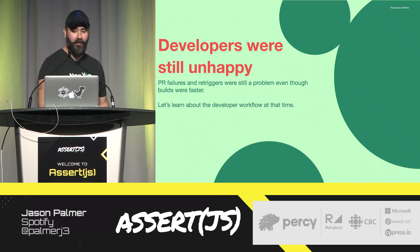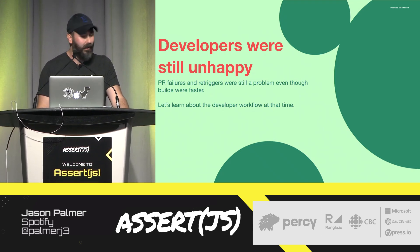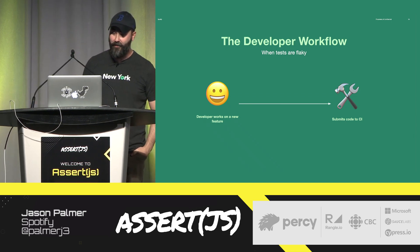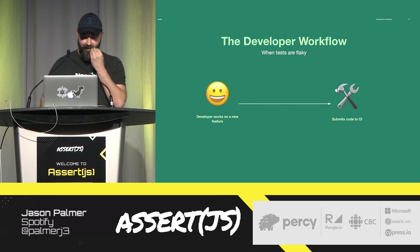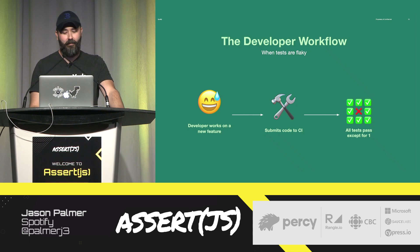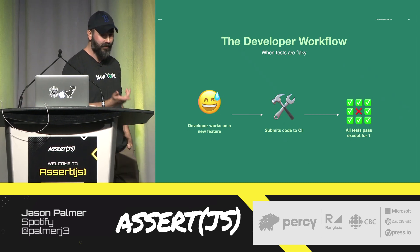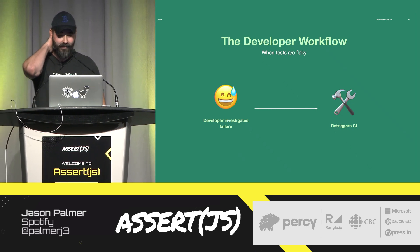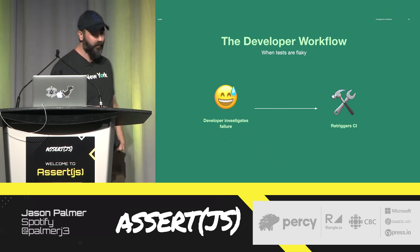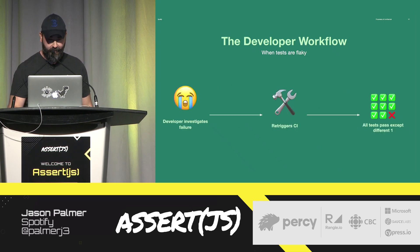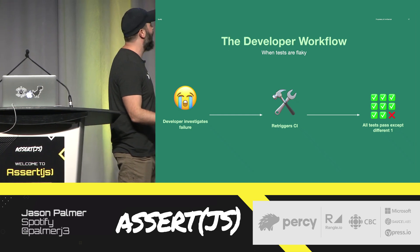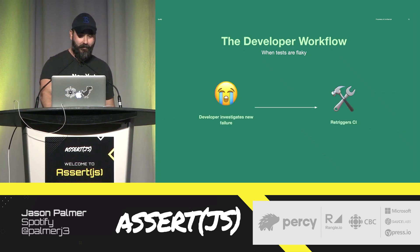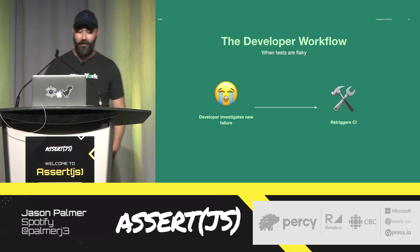So let's take a look at a typical developer workflow from that time. We start with a happy developer that submits a pull request — they've just spent a lot of time coding up a new feature. CI runs your build, everything is good, except it's not. A test fails, and the developer is confused because this test has nothing to do with their code change. So the developer investigates, decides to re-trigger the build because the tests pass locally. Except the build fails again — but this time it's a different test. The developer is now crying. So we re-trigger the build again.